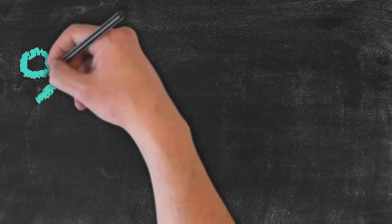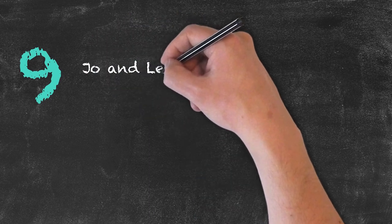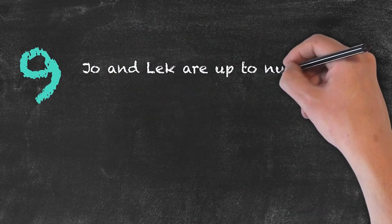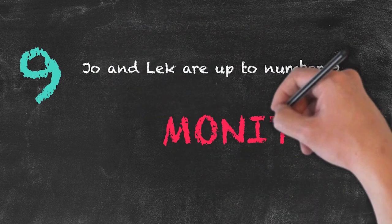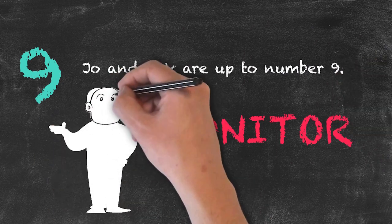For our final example, whilst an activity is going on, the teacher may write a note to himself: 'Joan Lec are up to number nine in this particular activity.' So what the teacher is doing at this point in time is to act as a monitor for the class.